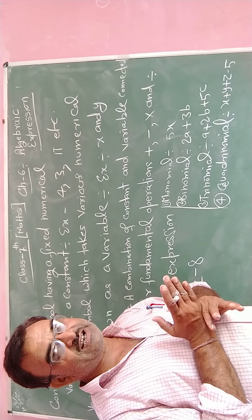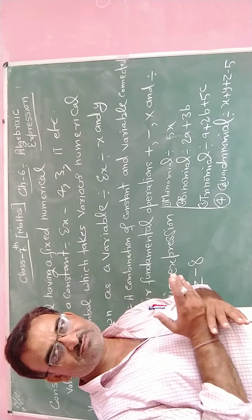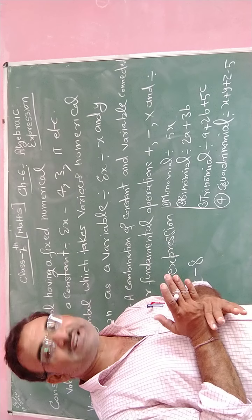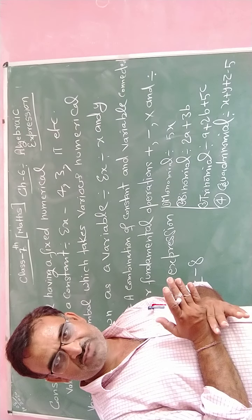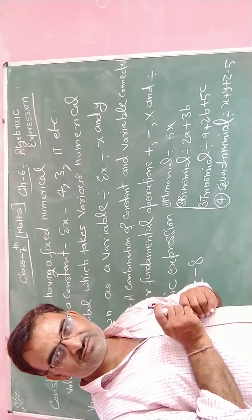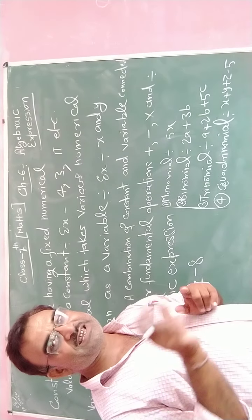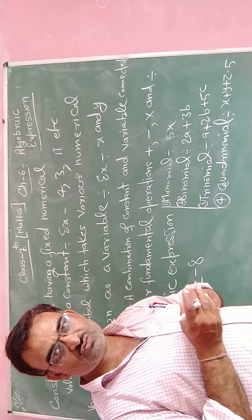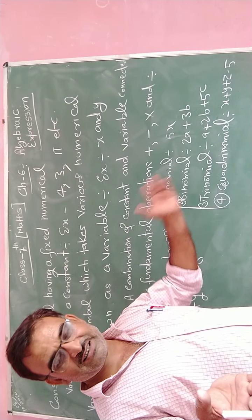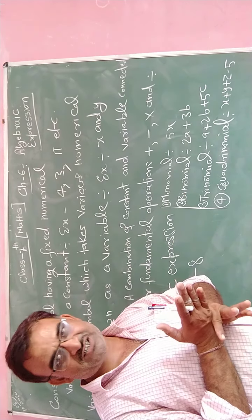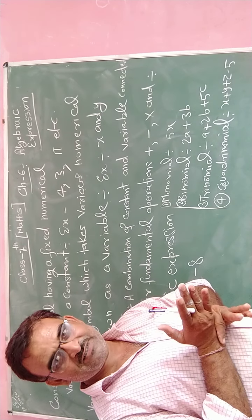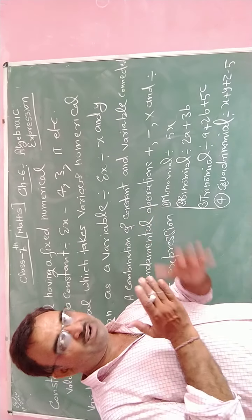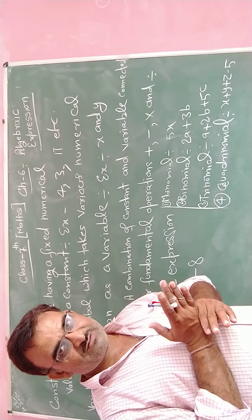So if constant and variable are connected by fundamental operations, that is called algebraic expression. For example, write 3x minus 4. Here 3x is connected by a sign minus and then 4. This is constant term and variable are connected by fundamental operations together.